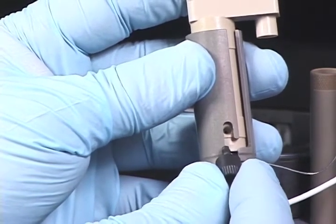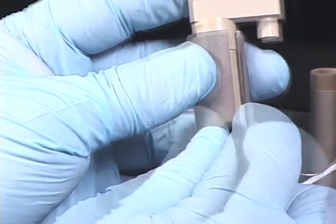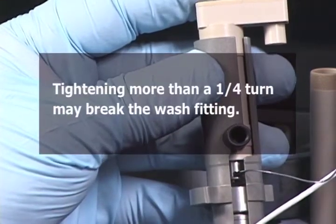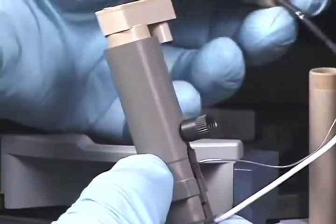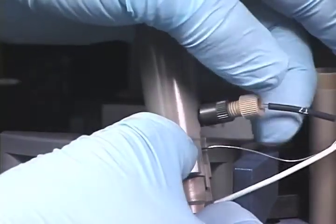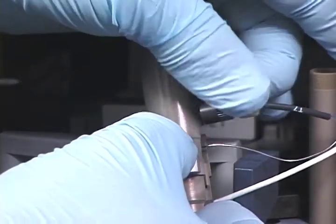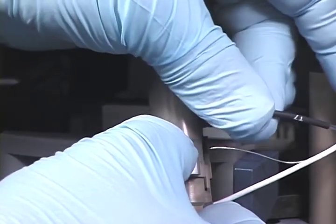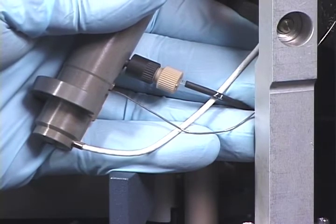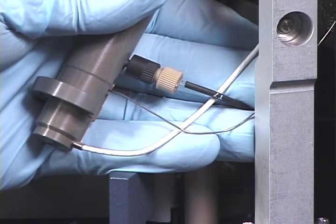Being careful not to cross thread the wash tube fitting, carefully screw it into the support sleeve and tighten it a quarter turn past finger tight. Then screw the needle wash tube into the wash fitting and tighten it a quarter turn past finger tight. The wash tube and seal extension tube must be routed in front of the load cell cable.